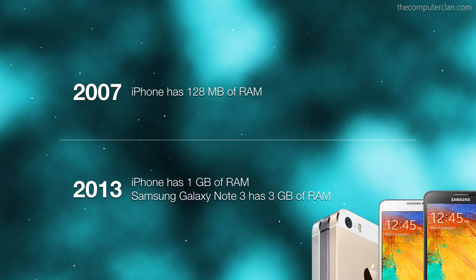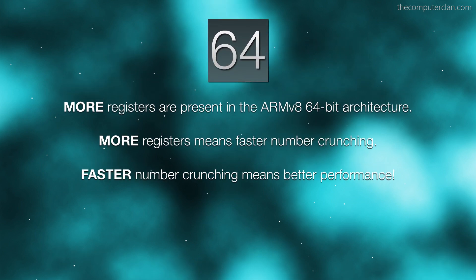But I also talked about performance with registers. For this example, I will talk about ARMv8. More registers are present in the ARMv8 64-bit architecture as opposed to the 32-bit architecture. More registers means faster number crunching — the system is more efficient with math. And faster number crunching means better performance for a lot of very useful things, like video encoding. Video encoding can run significantly faster on a 64-bit system because it is able to use more registers, even if we don't think about having more than four gigabytes of RAM.